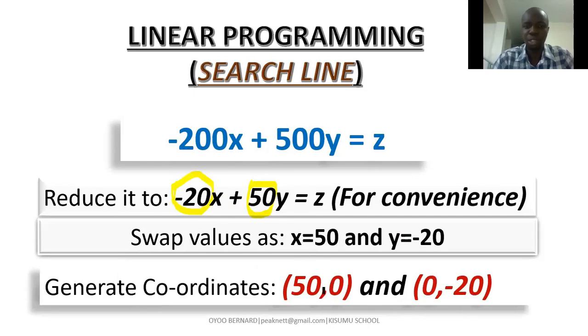So when x is 50, y is 0. So these values just give us the intercepts. And it's very easy to draw a line when you have the intercepts, the y-intercept and the x-intercept. So when y is -20, x is 0. So we have our two points.